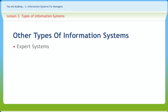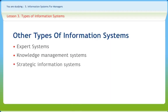Expert systems are knowledge-based systems that provide expert advice and act as expert consultants to users; examples include credit application advisors, process monitors, and diagnostic maintenance systems. Knowledge management systems support the creation, organization, and dissemination of business knowledge within the enterprise; examples include intranet access to best business practices, sales proposal strategies, and consumer problem resolution systems. Strategic information systems support operations or management processes that provide a firm with strategic products, services, and capabilities for competitive advantage — for example, online stock trading, shipment tracking, and e-commerce web systems. Functional business systems support a variety of operational and managerial applications of basic business functions, including accounting, financing, marketing, operations management, and human resource management.